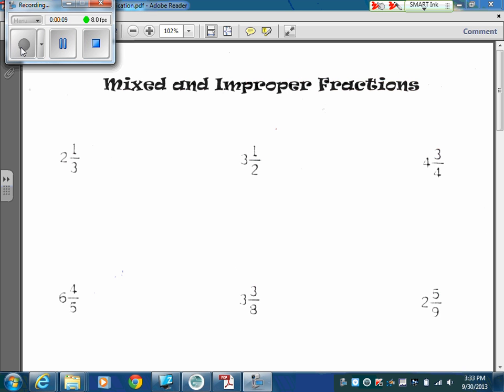A mixed number is going to have a whole number, like I'll show number one, with a fraction that's mixed. Improper is where we would have a larger number in the numerator spot and a smaller number as the denominator.